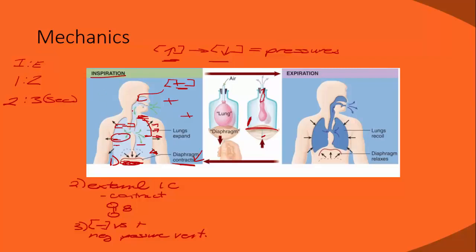To summarize inhalation: the diaphragm contracts and moves down; external intercostal muscles contract and bring the chest up and out; that increases the volume of the chest so the inside becomes more negative than the outside, which is more positive, and that pressure difference allows air to rush into the lungs.